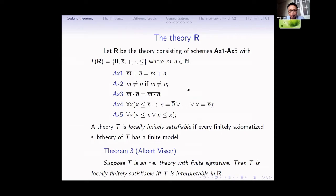Now I will talk about some important properties of Q and R. First I introduce the definition: we say that a theory T is locally finitely satisfiable if every finite sub-theory of T has a finite model. And this is an important theorem due to Ávdish: it gives a characterization of theories which can be interpreted in R. Suppose T is an RE theory with finite signature. Then T is locally finitely satisfiable if and only if T is interpretable in R.